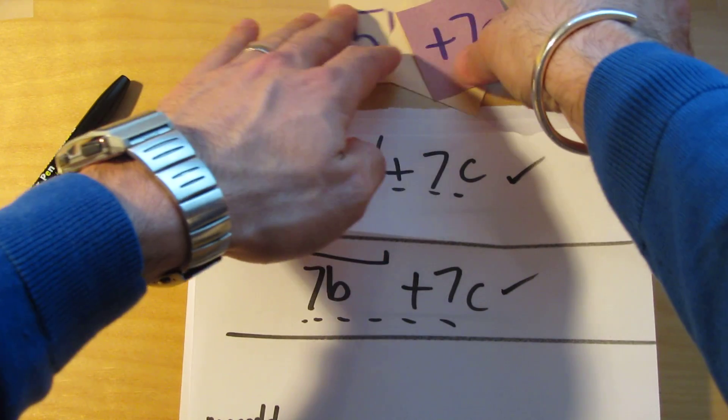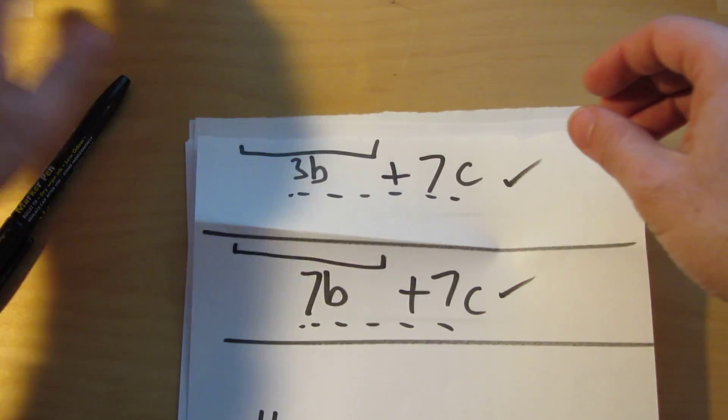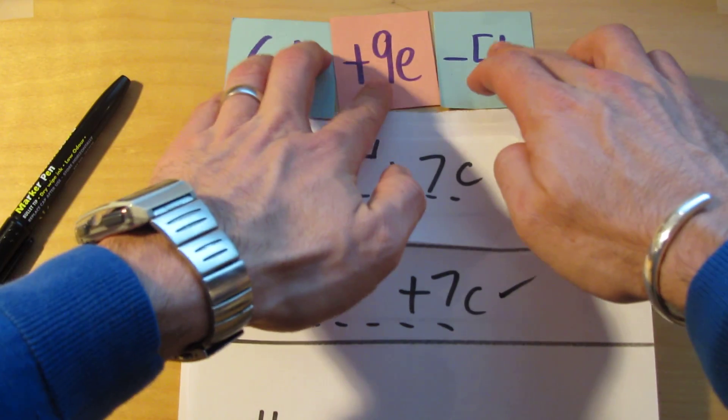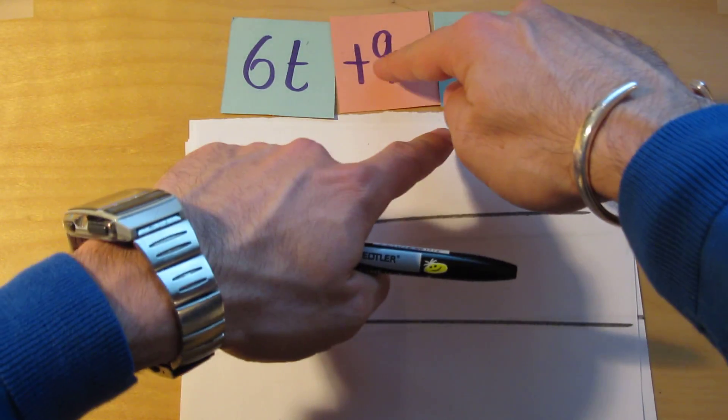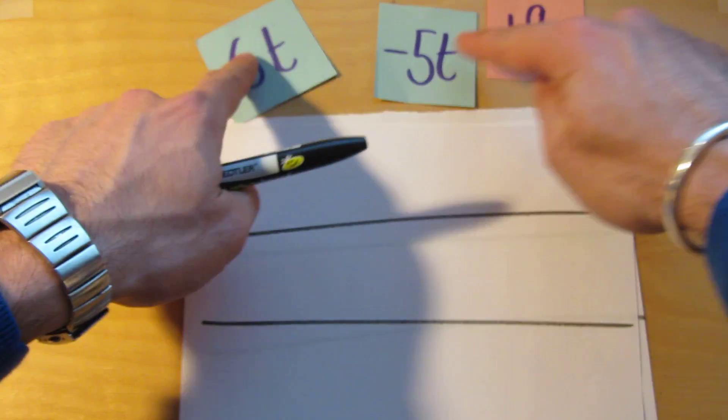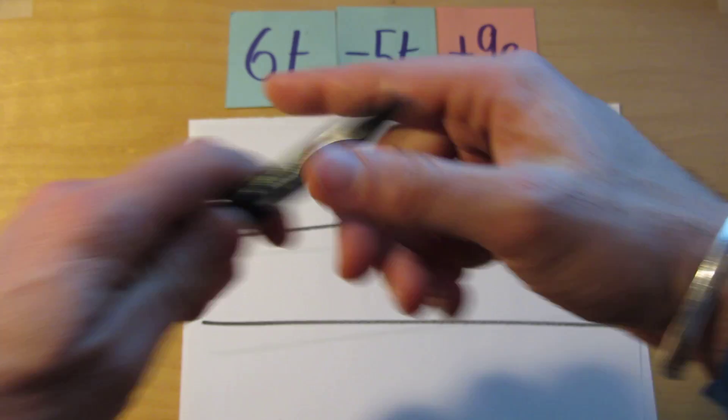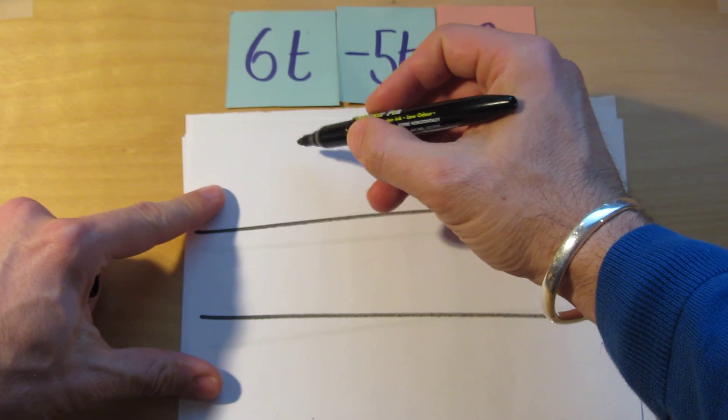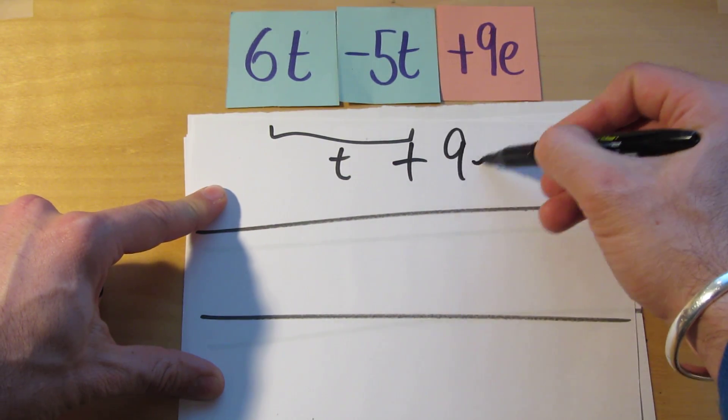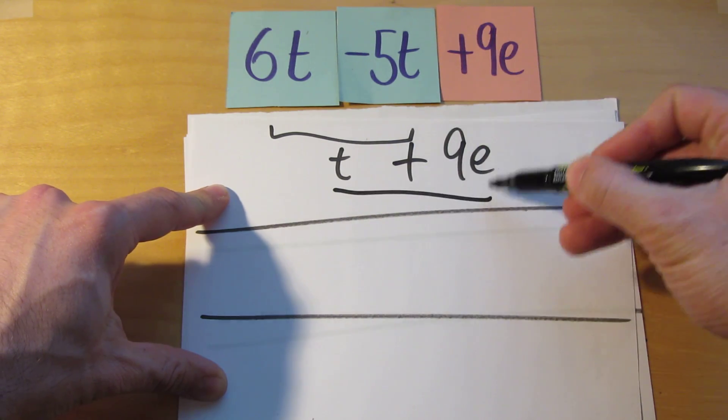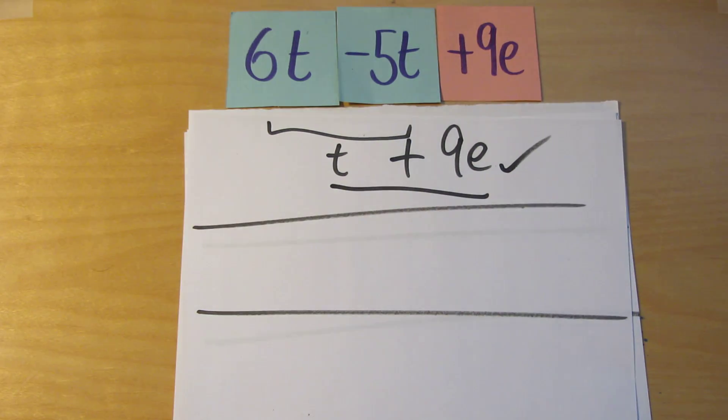Just to show you that it works with other numbers too. Let's try this. 6t plus 9e take away 5t. So I said collect the like terms. Bring the t's together. 6t take away 5t. That bit there gives you t. We've still got 9e to add and we have to leave it like that. We cannot simplify any further. That is as far as it goes. t plus 9e.